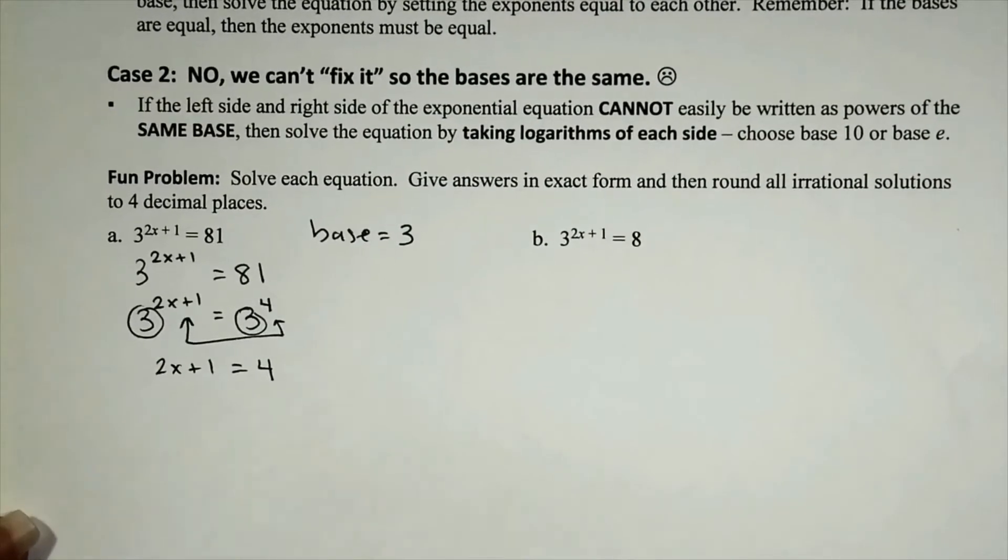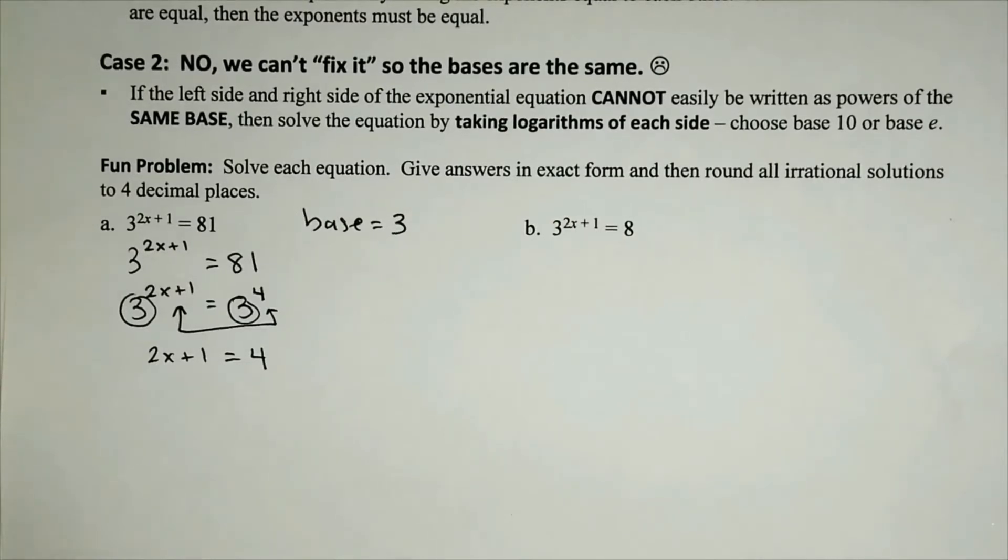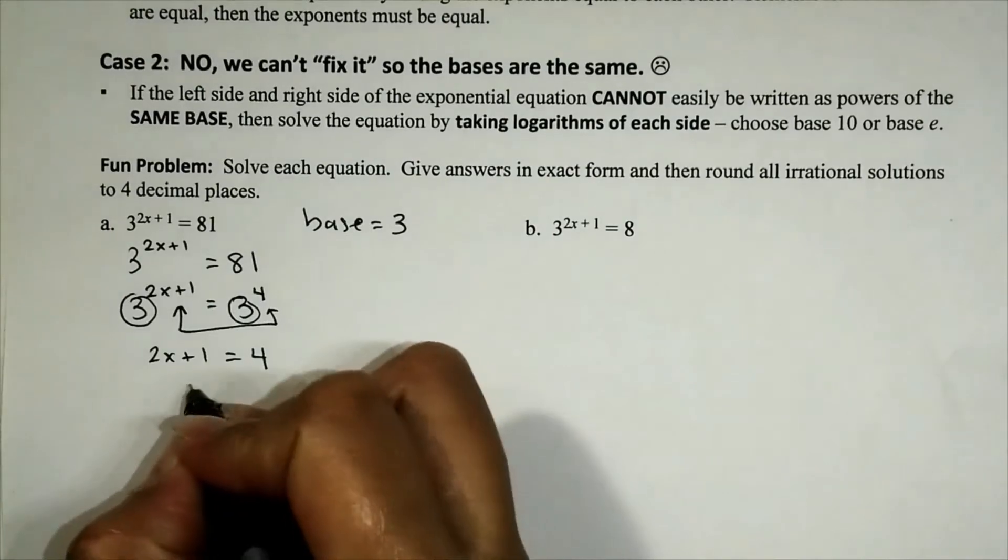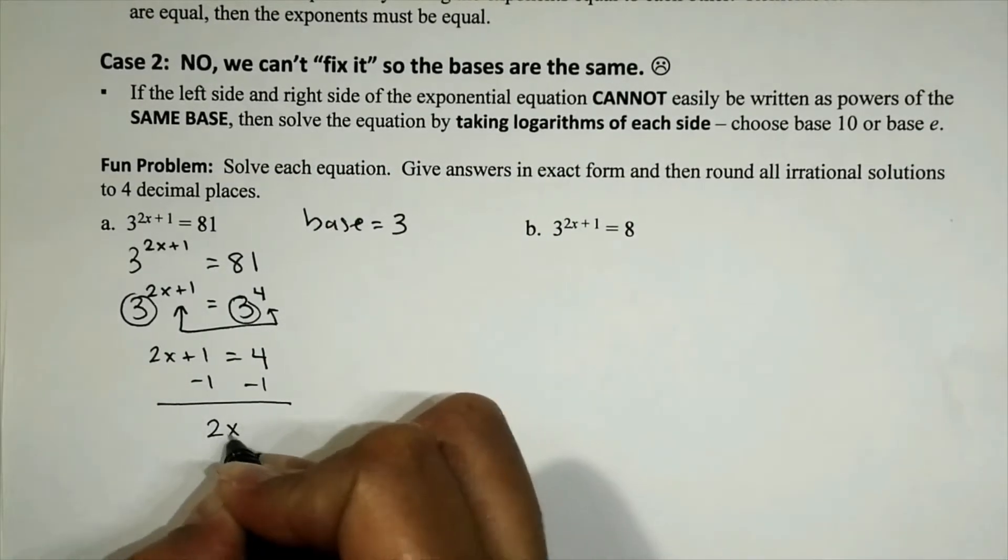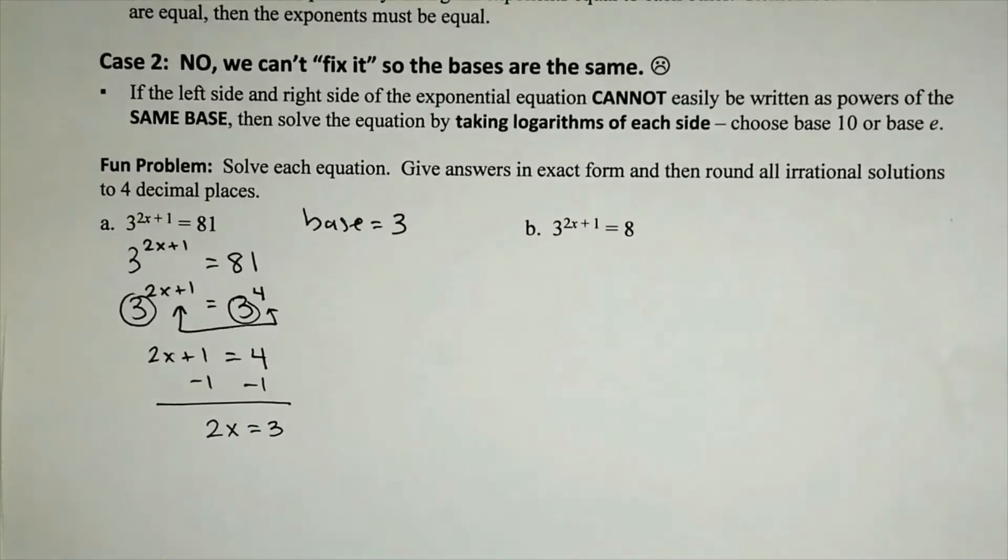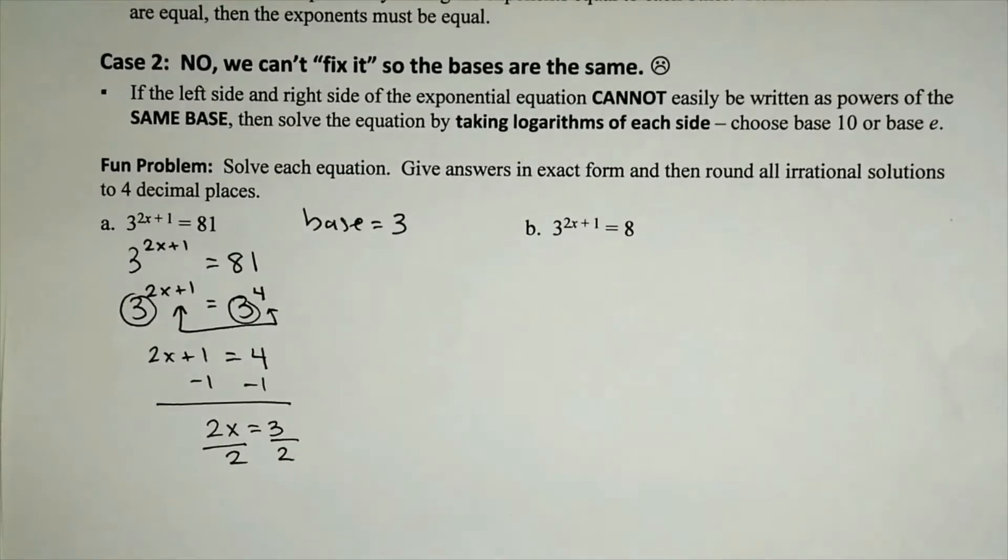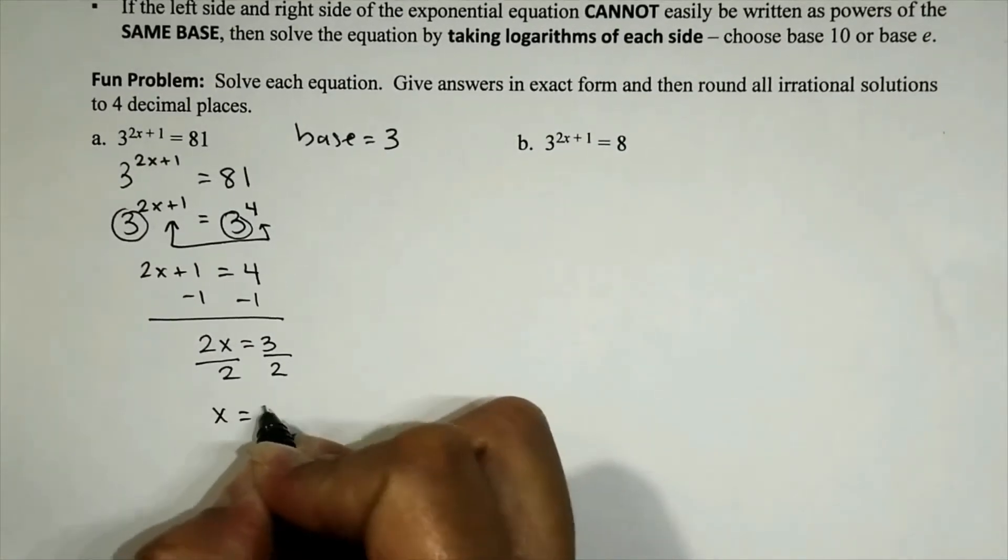And then you look at your new equation and solve it however you can. In this case, it's a plain old linear equation or degree one equation. So let's old school it. Let's go ahead, have variables on one side, constants on the other. We take our time, we subtract one from both sides. That will leave us with 2x equals 3. For the grand finale, we isolate the variable. To get rid of the times 2, we divide both sides by 2, and that will give us x equals 3 halves.